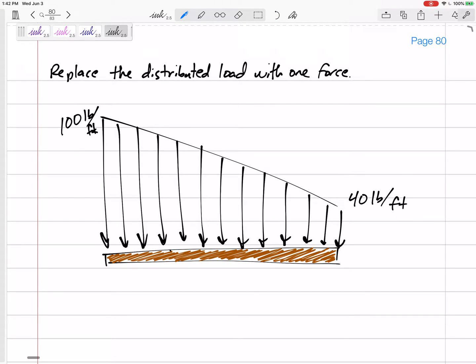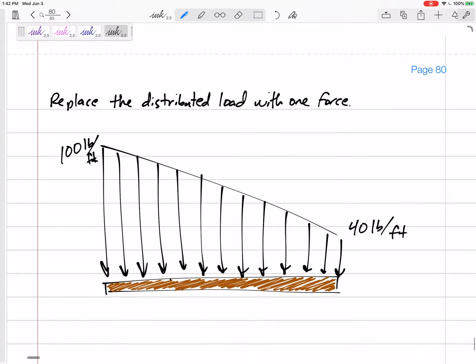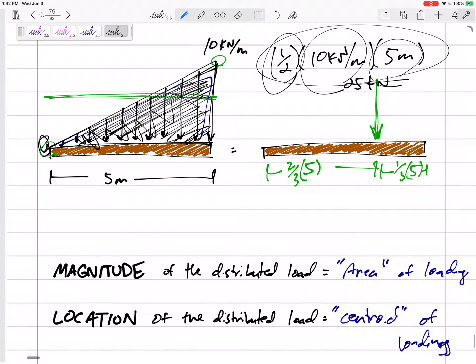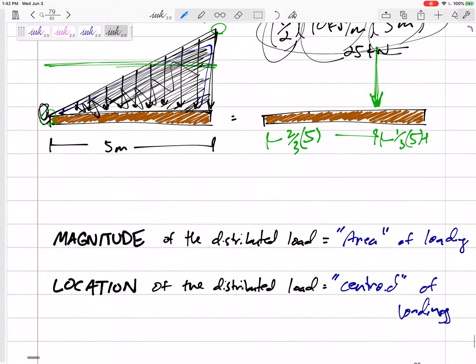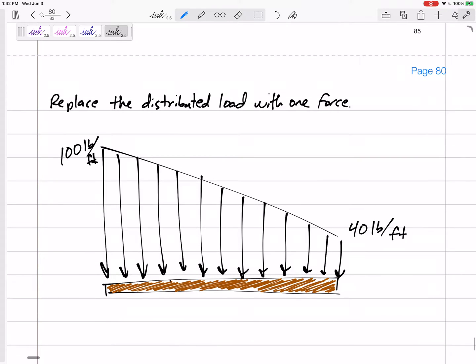There are a couple of different ways. You can think of this as a trapezoid and find the area of the trapezoid and the centroid of the trapezoid. Remember from the last one, the magnitude is the area of the loading, location is the centroid of the loading. But I don't know about centroid of trapezoids. We could do that.